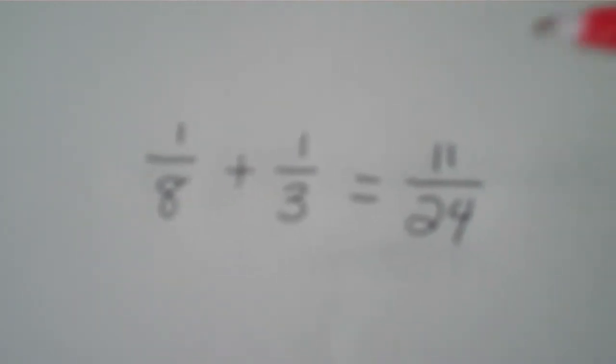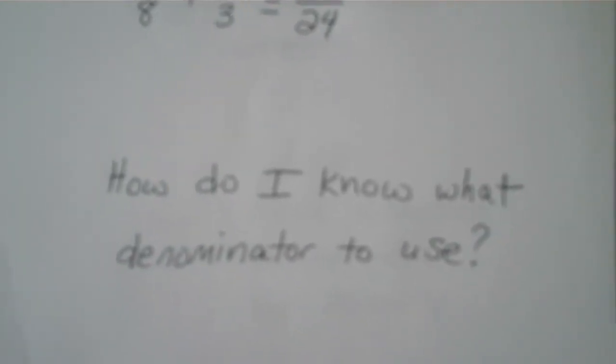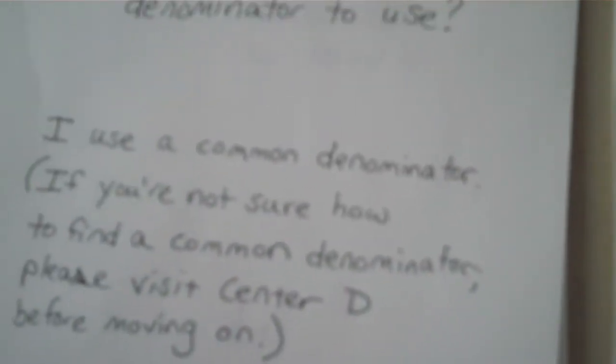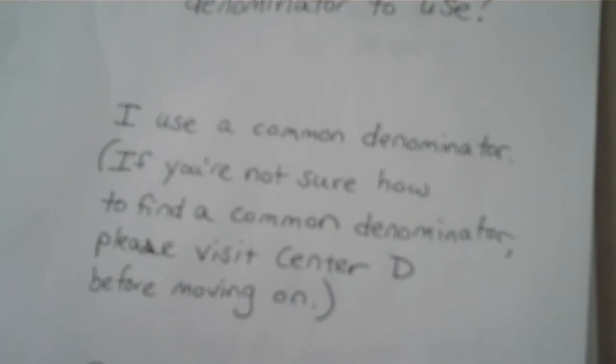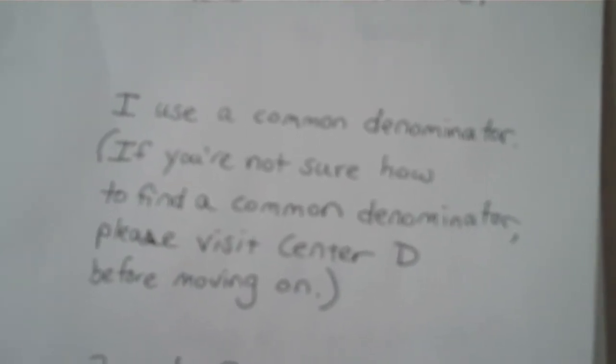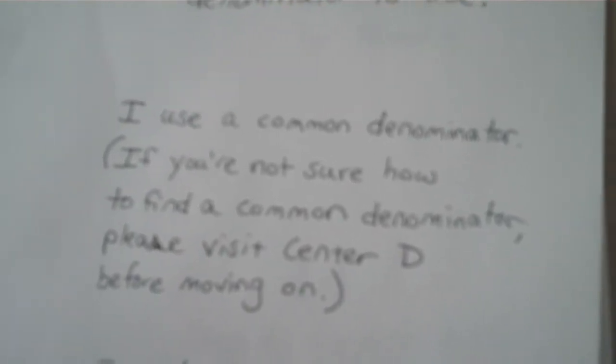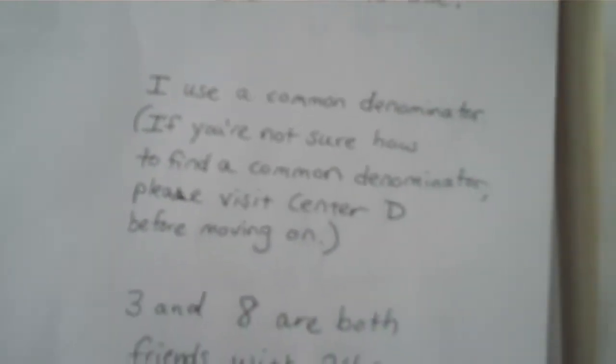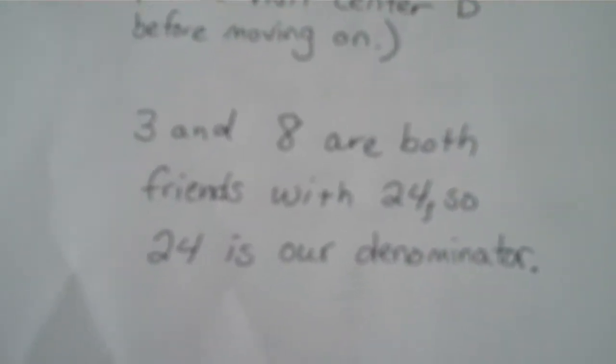First, let's talk about this denominator. How do I know what denominator to use? I'm going to use a common denominator. If you're not sure how to find a common denominator, please go back to center D before you move on. Three and eight are both friends with twenty-four, so twenty-four is going to be our denominator.